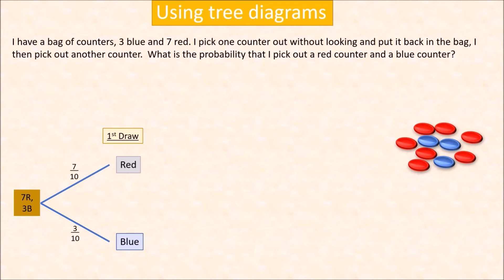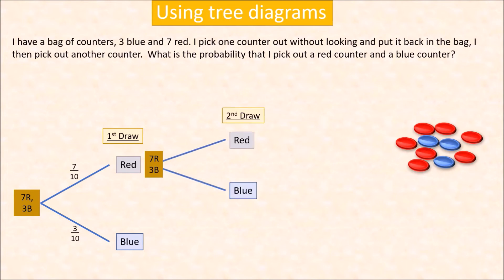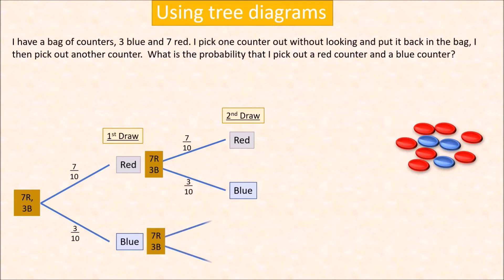On the second draw, we still have the same number of counters because we put the first counter back in the bag. So again we have 7 red and 3 blue. The probability of red on the second draw is still 7 over 10 and blue is still 3 over 10. Same when the first draw was blue — we still have 7 red and 3 blue, so the probability of red is 7 over 10 and blue is 3 over 10.